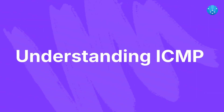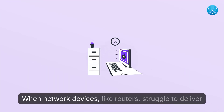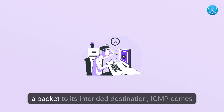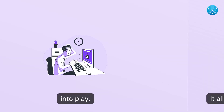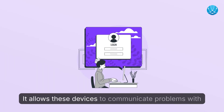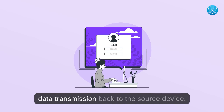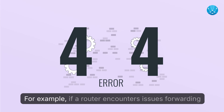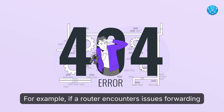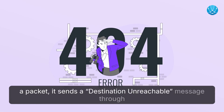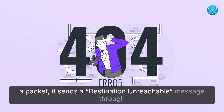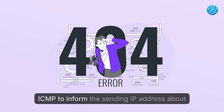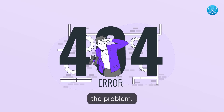Understanding ICMP. When networked devices, like routers, struggle to deliver a packet to its intended destination, ICMP comes into play. It allows these devices to communicate problems with data transmission back to the source device. For example, if a router encounters issues forwarding a packet, it sends a destination-unreachable message through ICMP to inform the sending IP address about the problem.